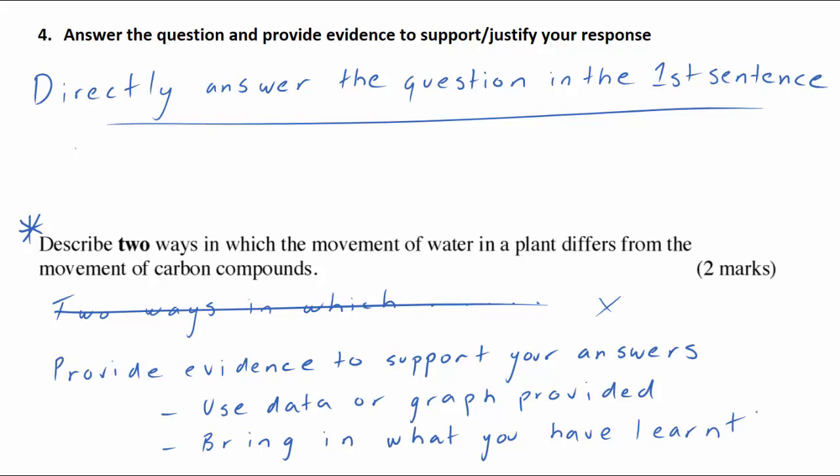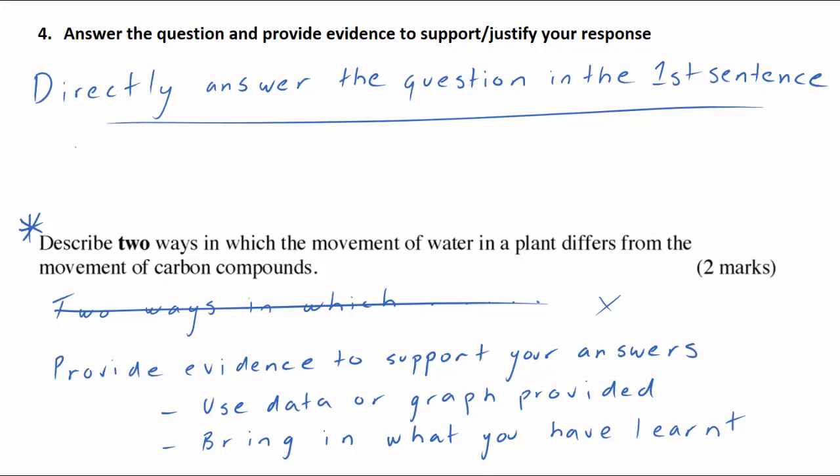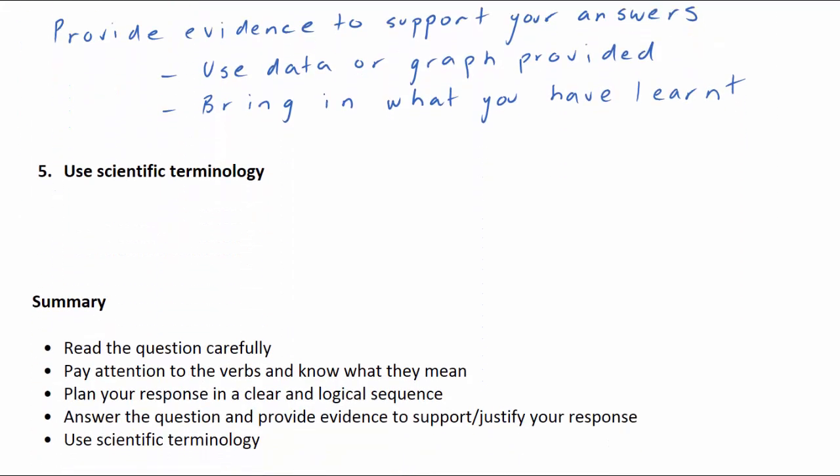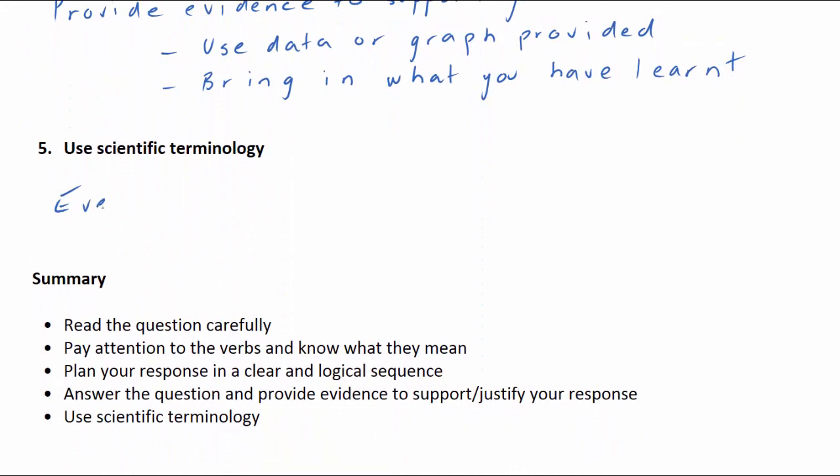Another important aspect of answering short response questions is to use the terminology of the subject in your response. Every topic in science has specific words and terms that you should use directly in your answers. For example, don't say that stuff inside of cells that helps us pass on genetic material. Use the terms deoxyribonucleic acid, chromosomes, nucleus, etc. Not only should you use the terminology of your topic, you should also provide detailed descriptions about these terms in your responses.